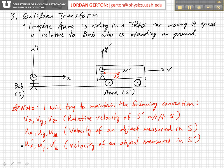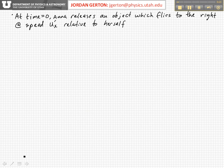Anna is in the train car moving to the right. And now, as I said, she's going to throw an object at time equals zero to the right with velocity ux prime with respect to herself.